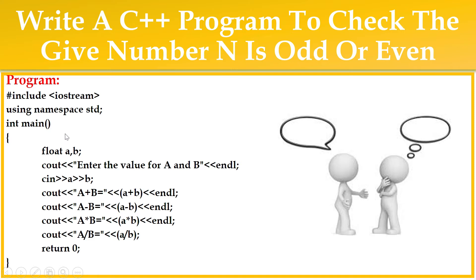Main is the main method, also called the entry point of a program. In this program, I've declared two variables, namely A and B, of float data type. I'm going to print a message using cout: enter values for A and B. The user will provide two values — the first stored in A and the second in B using cin. Then I'm going to perform addition, subtraction, multiplication, and division operations, printing each result using cout.